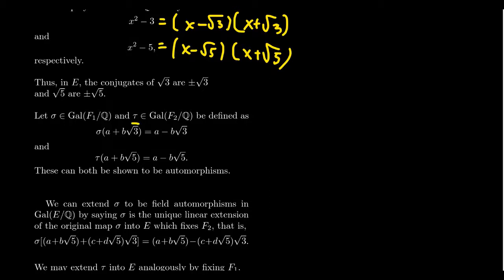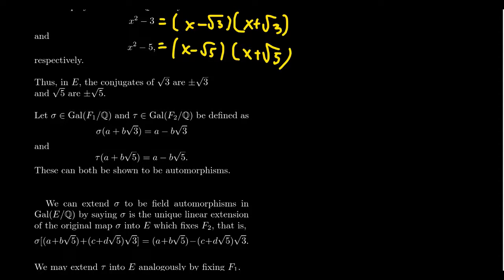We're going to do the same thing with tau, where tau belongs to the Galois group of F₂ over Q, and we're just going to swap √5 with −√5. Linearly extending so that this becomes a linear transformation on the vector space structure — leaving the rational numbers fixed as scalars — gives us a + b√5 maps to a − b√5. So to speak, we take the conjugates of each of these elements, and that's what these automorphisms are doing. You can verify that these are indeed field automorphisms.